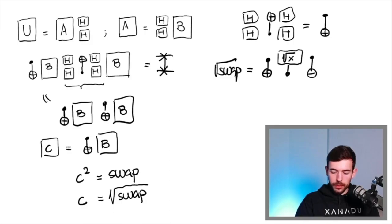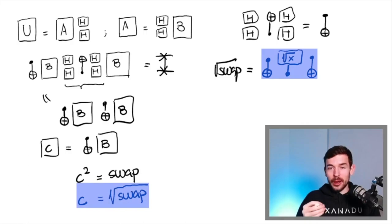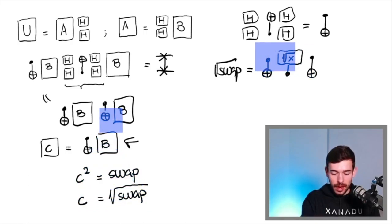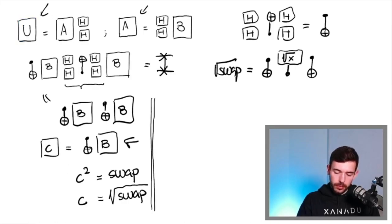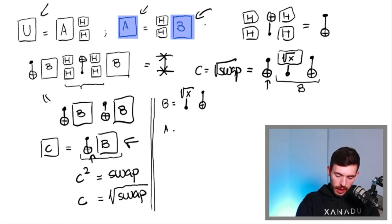But the square root of the SWAP gate is equal to this expression that we can see here. So it means that actually this expression is equal to C as a CNOT. So now if we have the value of C, we are going to have the value of B, then the value of A, and finally the value of U. In particular, we know this is the value of C that has this shape that we can see here. So it means that actually this expression here is the value of B, because we remove this first CNOT of the expression. So we know that B is equal to this control square root of X, CNOT.